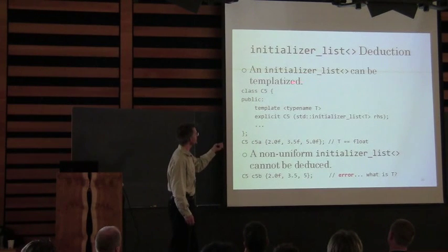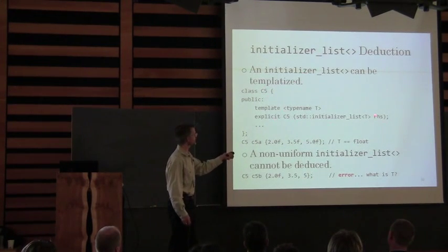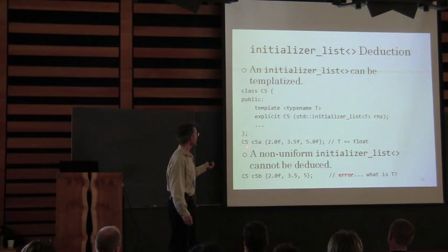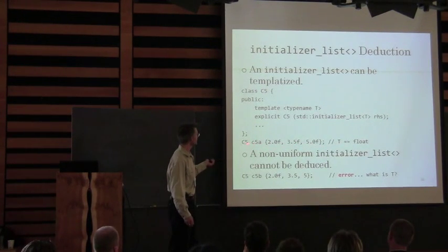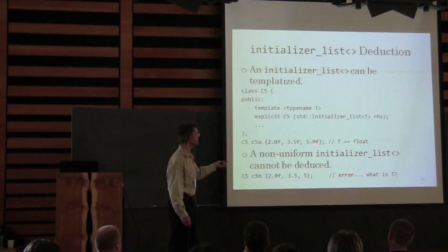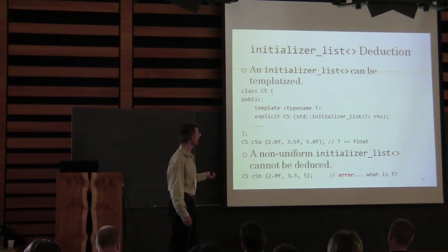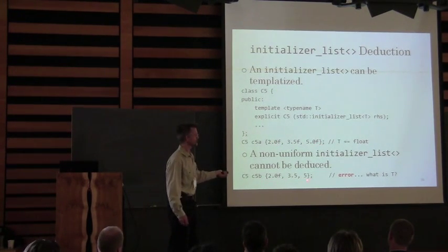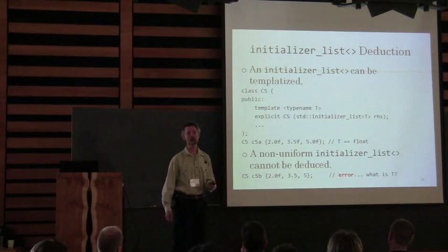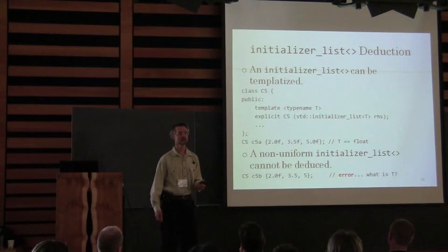Initializer list can be templatized — we've got an initializer list of T. We're going to call the constructor with a float because these are all uniform. If it's not uniform, the compiler will complain.